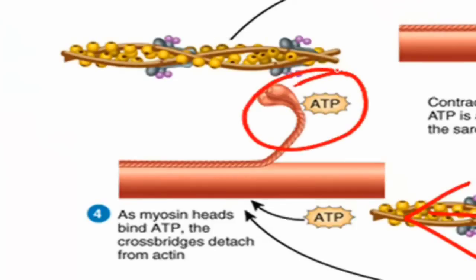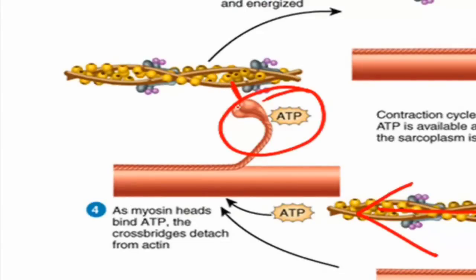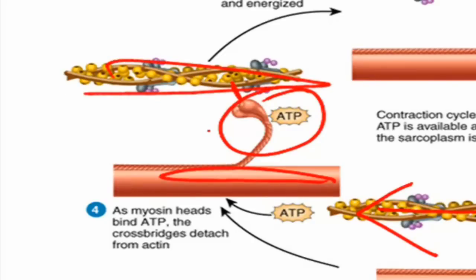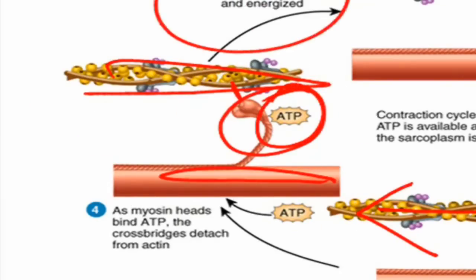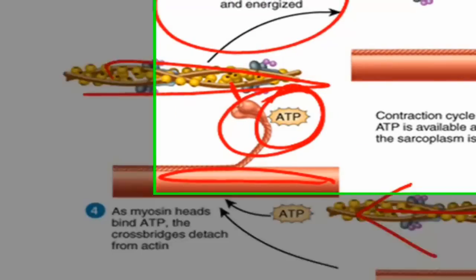The myosin head then binds to some ATP and the binding site is released. So the cross bridges between the thick and thin filament detach because of the presence of ATP — meaning energy is necessary for this process to end, not just to begin. The presence of that ATP also allows the myosin heads to reenergize and start the process again.